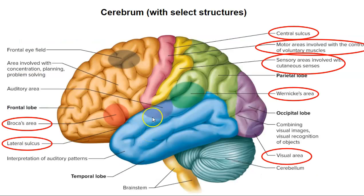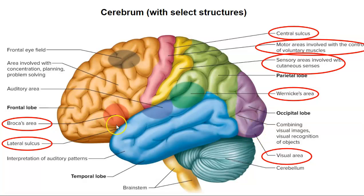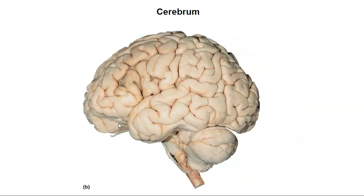Here they all are again. Here's the lateral sulcus and the central sulcus. This is the primary motor cortex on this gyrus, and on the next gyrus is the primary sensory cortex. Here's the primary visual cortex. And then the two areas associated with speech: Broca's area for speech production or formation, and Wernicke's area for the understanding or processing of speech. On a real brain these structures would be more challenging to identify, but it parallels nicely with the diagram.